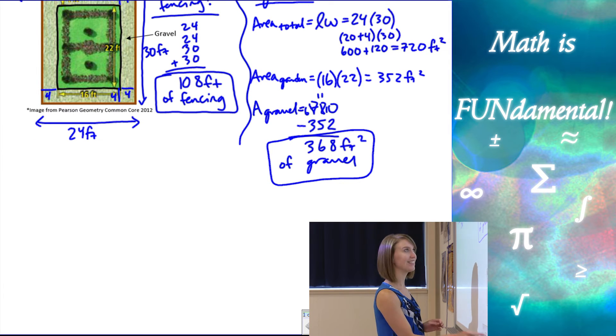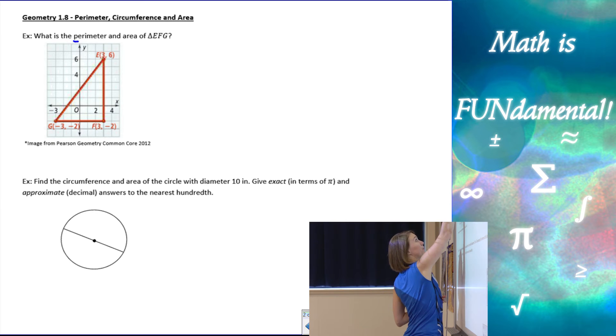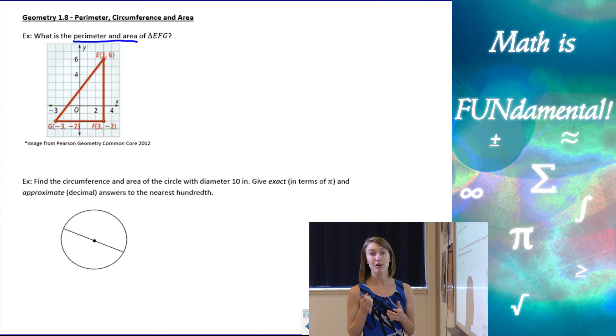So next part of our lesson, going on to the next page, we have another example, slightly different. It's not a word problem this time. It's a graph on a coordinate plane. It says, what is the perimeter and area? So we have both parts, perimeter and area of our triangle.